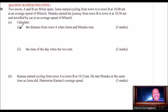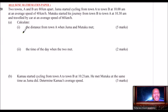Part A calculates the distance from town A when Juma and Mutuku meet — you get five marks. When solving this kind of question, I normally like to make a sketch. So let's say this is the distance from A.